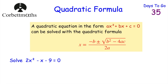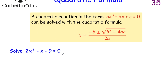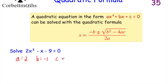Whenever I'm using the quadratic formula, the first thing I do is make sure the quadratic equals zero — which it does — and then I write down the values for a, b, and c. So a is the coefficient of x squared, the number in front of x squared, which in this case is 2, so a equals 2. b is the coefficient of x, the number in front of x. Here we've got minus x, which means minus 1x, so b equals minus 1. And c is the constant on the end — here we've got minus 9, so c equals minus 9.